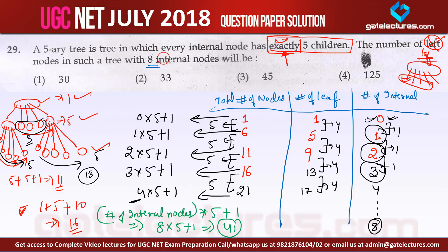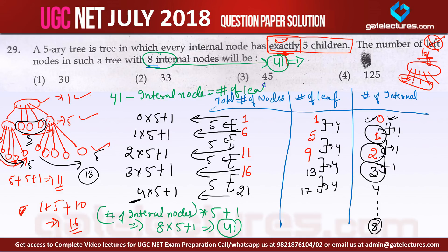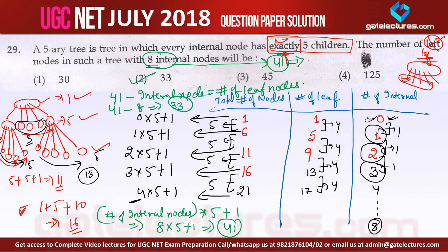When there are 8 internal nodes, total number of nodes = 8×5 + 1 = 41. Leaf nodes = total nodes − internal nodes = 41 − 8 = 33. So there will be 33 leaf nodes, and the correct answer is option 2. This question tests aptitude knowledge, not just computer science knowledge.